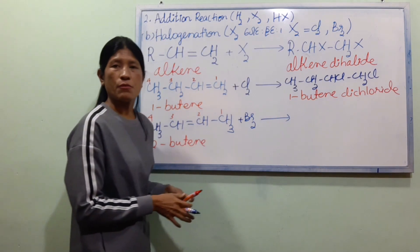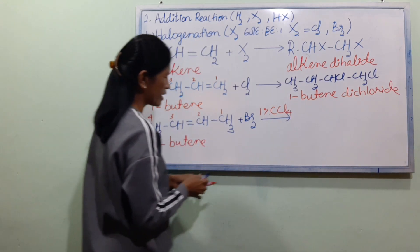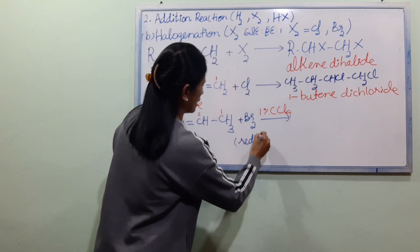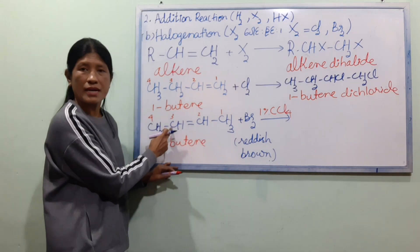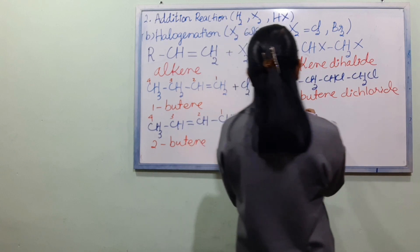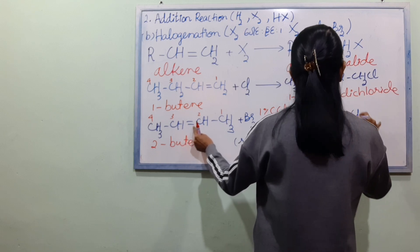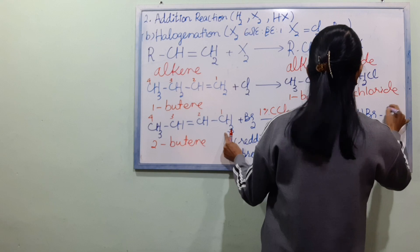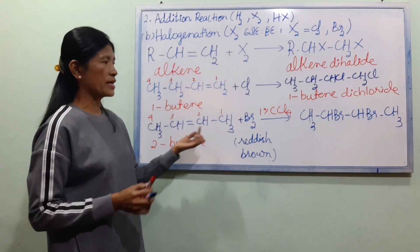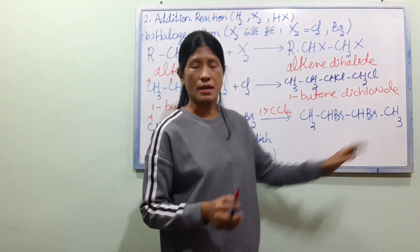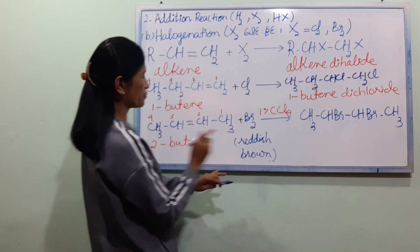Now we have to add the reddish brown solution. The reddish brown colour is decolourised, showing a positive test for alkene.